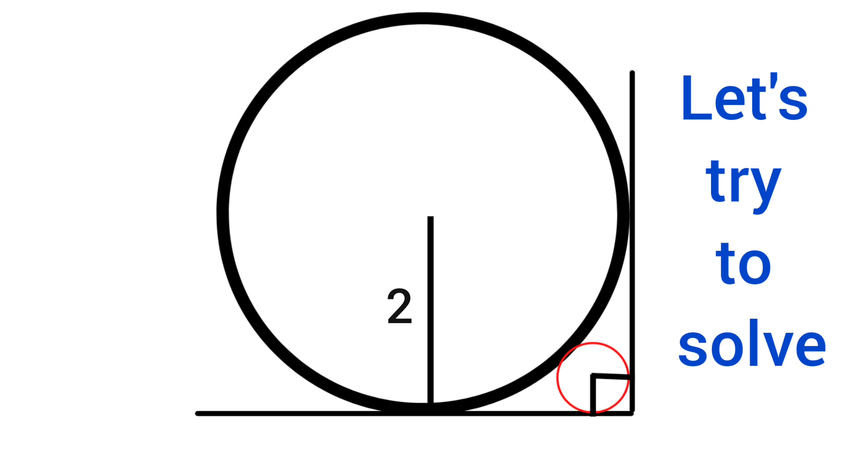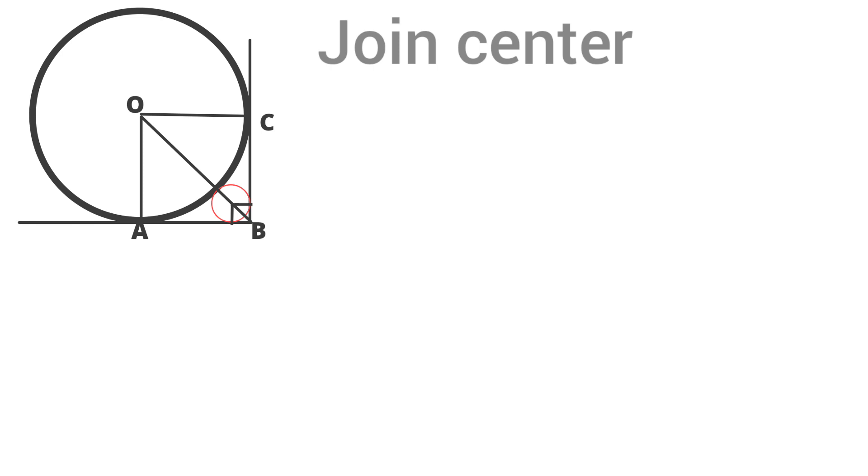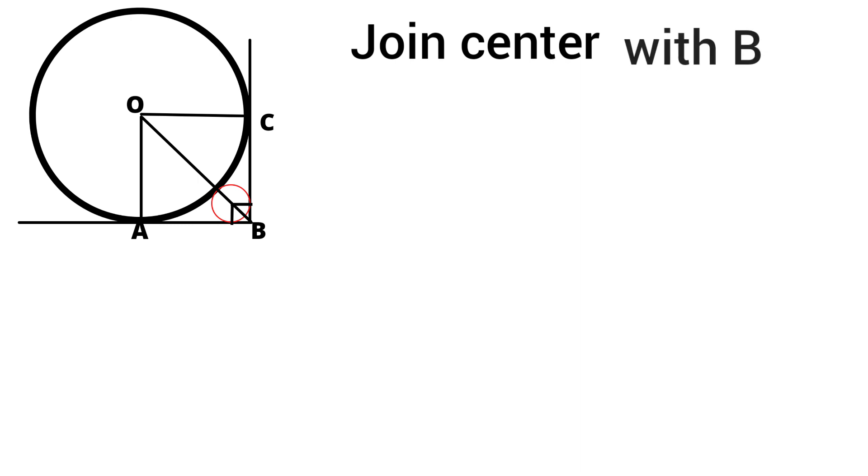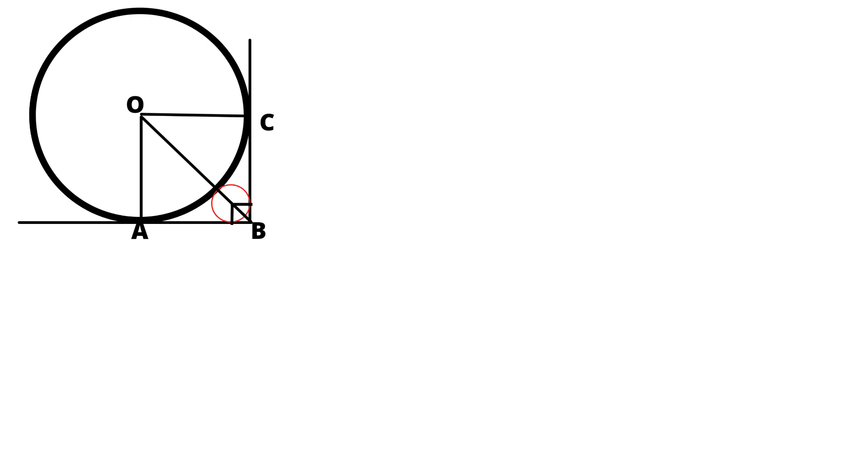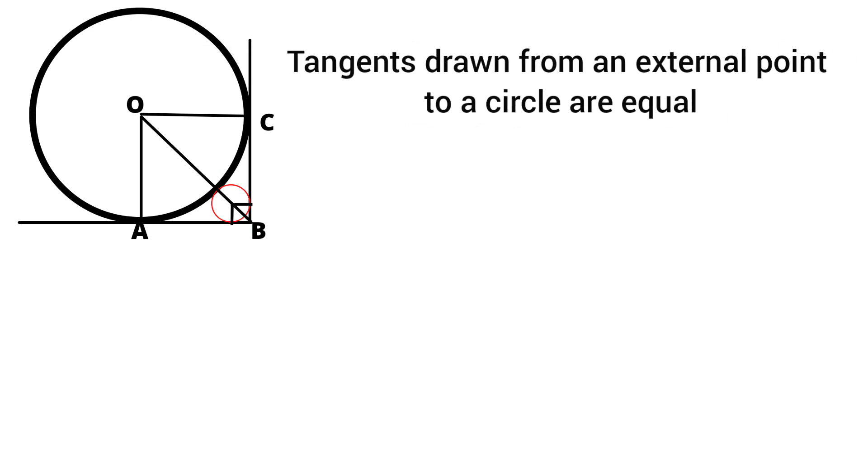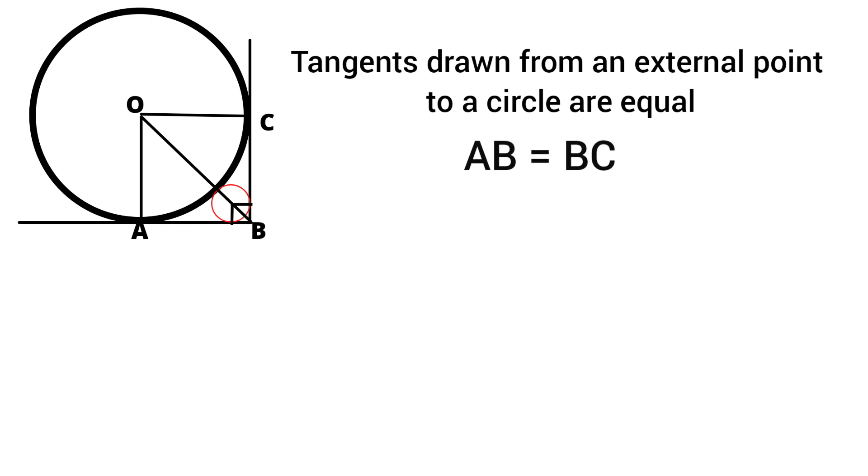To find out the radius of smaller circle, let's first join the center of the bigger circle to that point B. Then let's draw two radii OA and OC. Now let's try to find out the side length of OB. We know that tangents drawn from an external point to a circle are always equal to each other. Here BC and AB are the tangents drawn from an external point B to that bigger circle. They also act as tangent to that smaller circle. So AB equals BC.